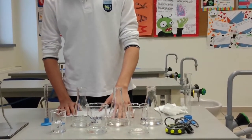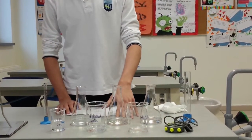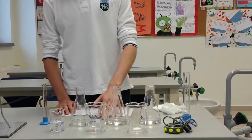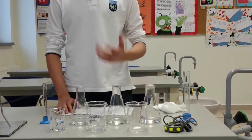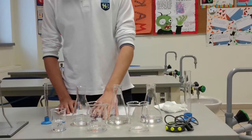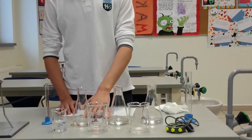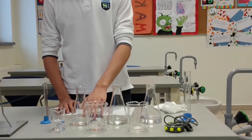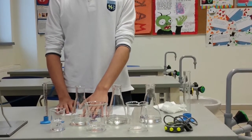In the second flask, I will have 40 ml of sodium thiosulfate but I'll have 10 ml as well of water to make it more dilute. In the last flask, I will have 30 ml of sodium thiosulfate and 20 ml of water.